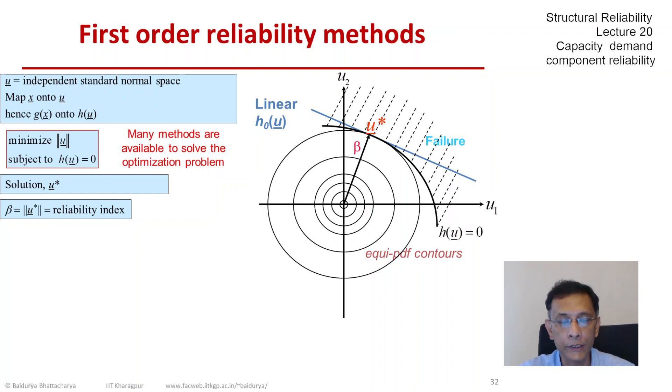This beta is the reliability index and it is the minimum distance. Now why is it the failure probability or why is it the reliability?